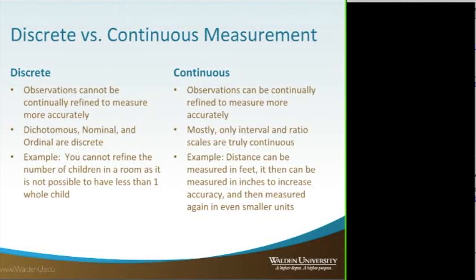Another point is discrete versus continuous. Discrete observations are nominal and ordinal measures. They can be dichotomous as well. For example, gender is dichotomous — there are two options and only two: male and female. A nominal observation would be maybe ethnicity: white, black, Hispanic, Asian, mixed. They're names, not associated with numbers. An ordinal example would be an ordered set.